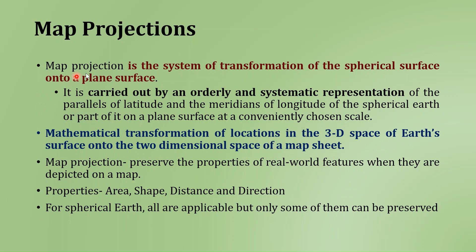The total idea of map projection is to preserve the properties of real-world features when they are depicted on a map. The properties to be maintained are area, shape, distance, and direction. Actually all are applicable, but during the projection only some of them can be preserved.